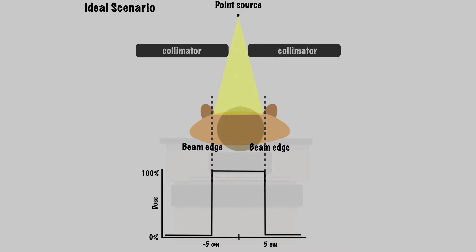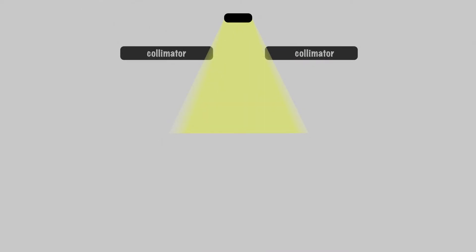This is an idealized dose distribution of what we would see if we had no penumbra, with sharp falloffs at the edge. This is what we call a step function in physics because it only steps straight up or down. Now let's think about what happens in a real situation.